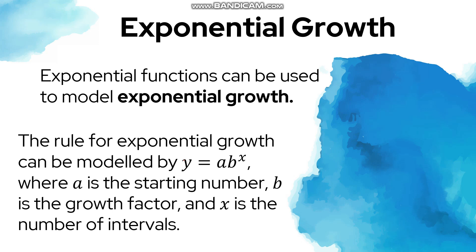The rule for exponential growth can be modeled by y equals a times b raised to x, where a is the starting number. This is the form we will use to write the function representing a given word problem. Here, b is the growth factor — for example, whether the number of bacteria doubles, divides itself, or is multiplied by five. And x is the number of intervals, for example, it doubles every one second or every five seconds.